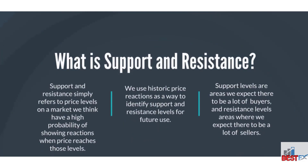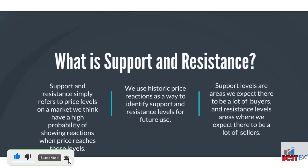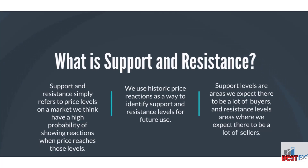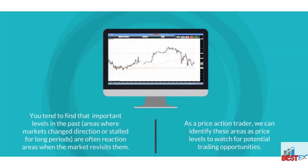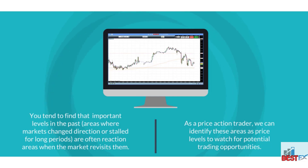What is support and resistance? Support and resistance simply refers to price levels on a market we think have a high probability of showing reactions when price reaches those levels. We use historic price reactions as a way to identify support and resistance levels for future use. Support levels are areas we expect there to be a lot of buyers, and resistance levels are areas where we expect there to be a lot of sellers.